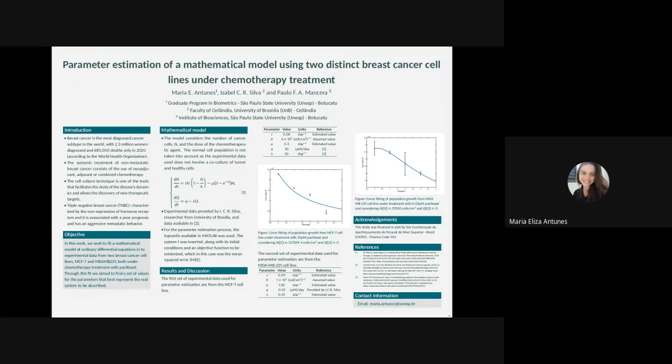The disease has histological and molecular classification taking into account the place where it begins to develop and also the presence of hormonal receptors. Among the molecular subtypes of breast cancer, the triple-negative is one of them.